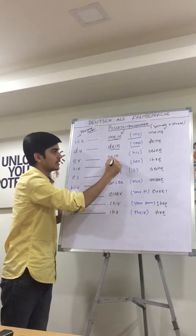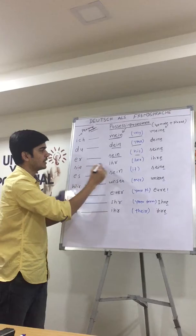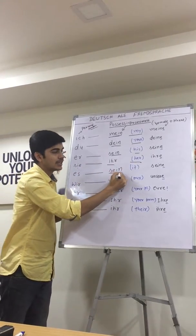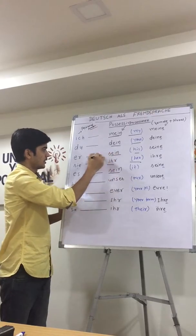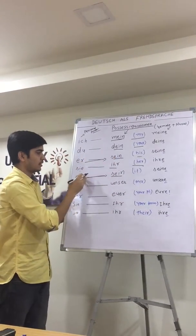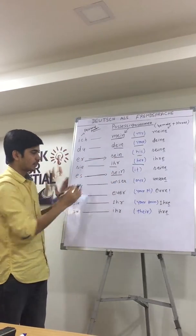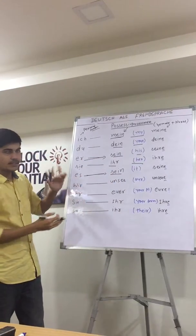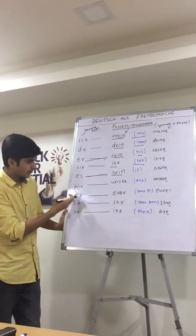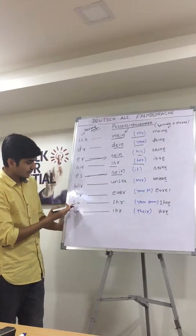Then 'er' becomes 'sein' (his). See here — 'sie' becomes 'ihr' (her). 'Es' becomes 'sein' (its). So 'er' and 'es' both share 'sein'. 'Wir' becomes 'unser' (our). 'Ihr' becomes 'euer' (your plural). And 'Sie' formal becomes 'Ihr'.